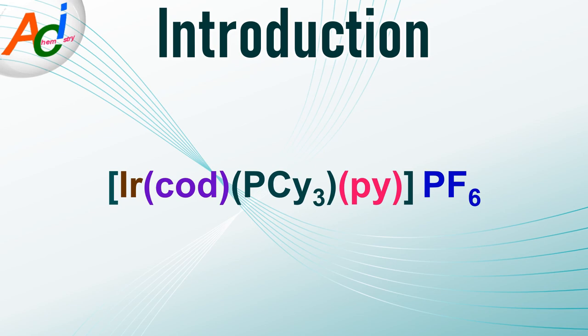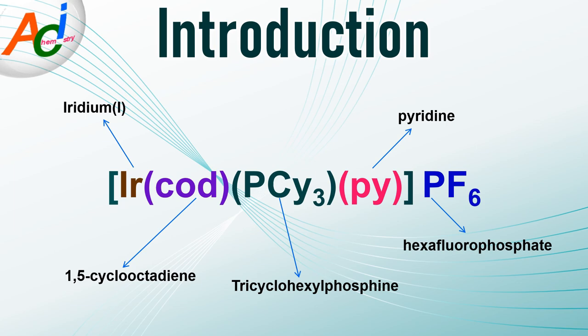The Crabtree's catalyst is an organo-iridium compound. It is a homogeneous catalyst for hydrogenation and hydrogen transfer reactions developed by Robert H. Crabtree in the 1970s. The central metal ion is a unipositive iridium ion coordinated to the ligands 1,5-cyclo-octadiene, tricyclohexylphosphine, and pyridine. The anionic part is the hexafluorophosphate ion.